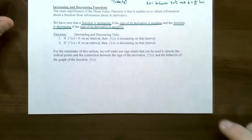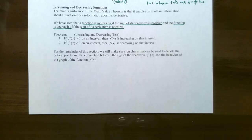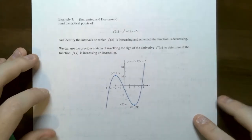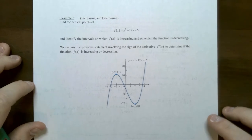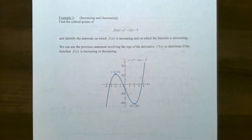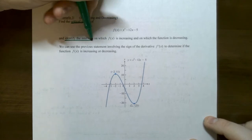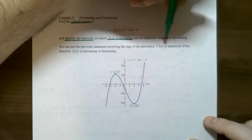For the remainder of this section, we will be making what's called sign charts or number lines that will denote the critical numbers and their connection to the sign of the derivative and the behavior of the original graph f of x. So let's try example three. We are going to find the critical points of the function f of x equals x cubed subtract 12x subtract 5, and also identify the intervals where this function is increasing and where the function is decreasing.